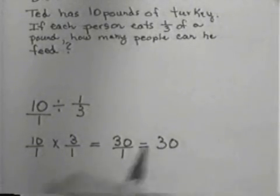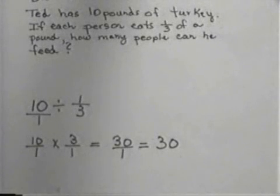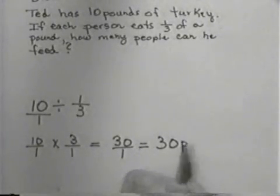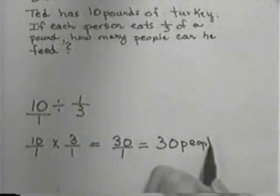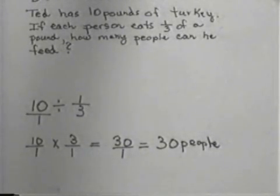Nothing will reduce, so I'm ready to multiply and I end up with 30 over 1, which is the same thing as 30. This time my question says how many people can he feed, so I'm coming up with the fact that I could feed 30 people. So if you had 10 pounds of turkey and you gave everybody a third of a pound, you'd be able to feed 30 people. So you need to be very careful when you're reading a problem, especially that involves either multiplying or dividing, and you have to decide whether you're repeatedly doing the same thing over or whether you're taking some large quantity and splitting it up into little pieces.